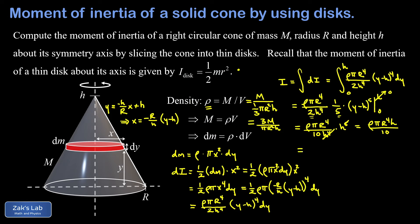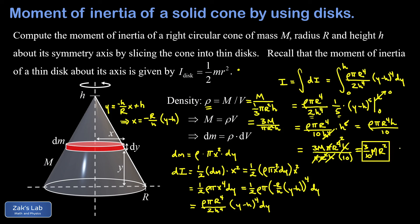Substituting rho equals 3M over pi·R²·h into our expression, we get 3M in the numerator along with pi·R⁴·h, and pi·R²·h in the denominator along with a factor of 10. Simplifying: pi cancels, two factors of R cancel leaving R², and the h cancels out — so the moment of inertia is independent of the cone's height. The remaining constants are 3 in the numerator and 10 in the denominator, giving a final result of I equals 3/10 · M·R².